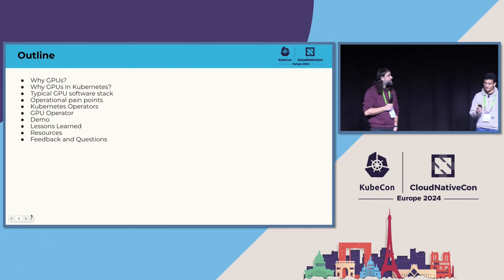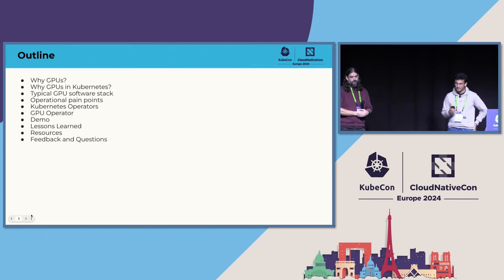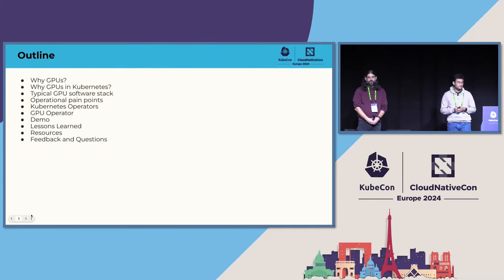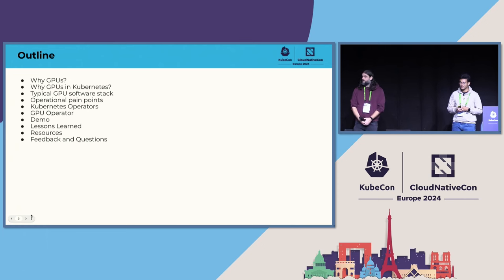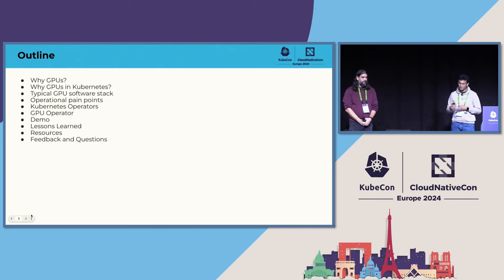This is the outline for the talk today. We're going to talk about why GPUs have become so ubiquitous and why GPUs in Kubernetes. We'll walk through how the typical GPU software stack looks, what are the main operational pain points when enabling the GPU software stack, then delve into operator pattern, how we implemented GPU operator and some technical details. We'll end with a demo and lessons learned through this journey.